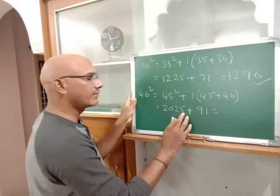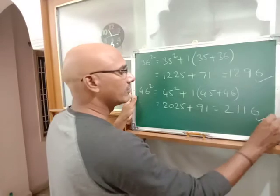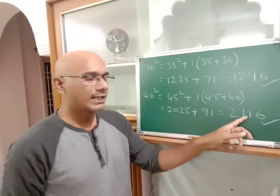Adding these: 2, 1, 1, 6. So 46 squared equals 2116.